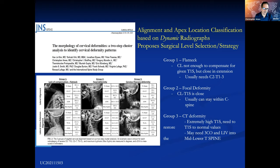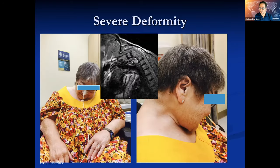For low-grade flexible deformities, work presented at NASS suggests that an anterior cervical fusion may be appropriate. The final group is a cervical thoracic deformity — unfortunately the group I deal with most in my practice. They have a very high T1 slope, and these patients may need a three-column osteotomy and instrumentation extending to the lower thoracic spine. It's interesting that the AI can take a totally independent look at cases and give us treatment insights.